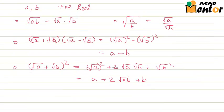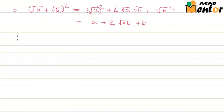Now let us look at a few examples to help us clarify these properties. These properties are fairly similar to what we have seen for rational numbers, so it should not be much of a difficulty to understand them. Say for example, we are asked to simplify root 3 plus root 5 whole square.